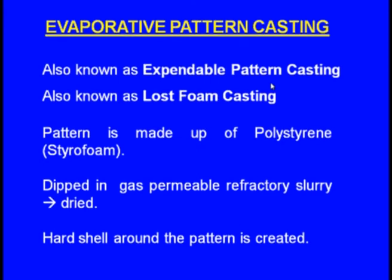The pattern is dipped in a gas-permeable refractory slurry, creating a shell. Then while the pattern is still present inside the shell, the molten metal is poured. As the molten metal enters the shell where the pattern is, the pattern will evaporate and in the place of the pattern, the molten metal will be acquiring.